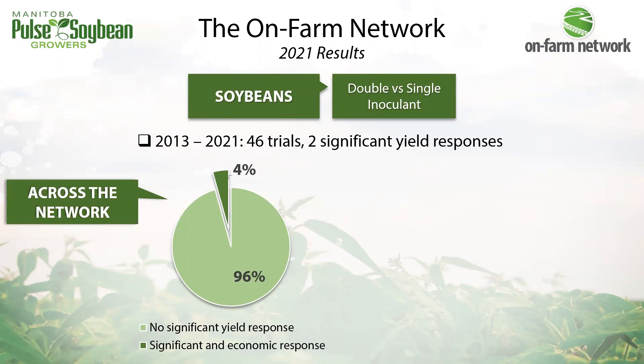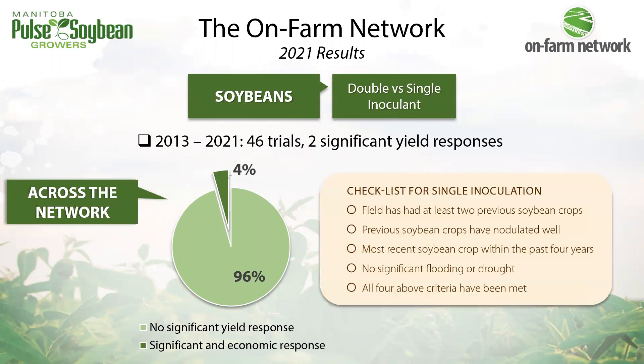Across the network, we've hosted 46 double versus single inoculant trials since 2013, with a significant yield response providing ROI only 4% of the time. All sites had at least two — often three — previous soybean crops with good nodulation, building the soil rhizobia population. If moving to a single inoculant strategy interests you, we have a checklist based on field history. Note there is a criteria for no significant drought. We've been advising folks to consider granular or double inoculation for this upcoming spring since granular is more resilient under tough spring conditions.